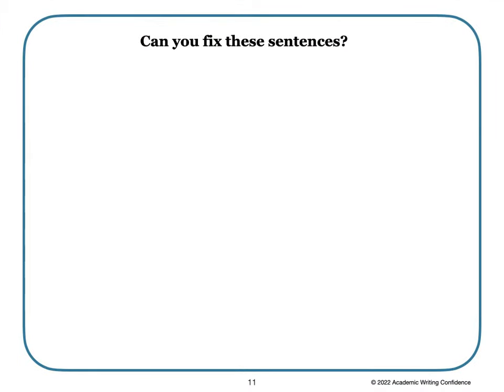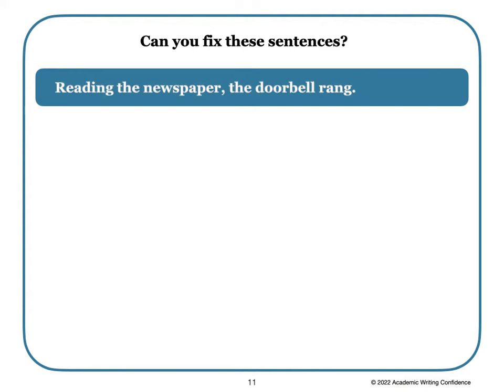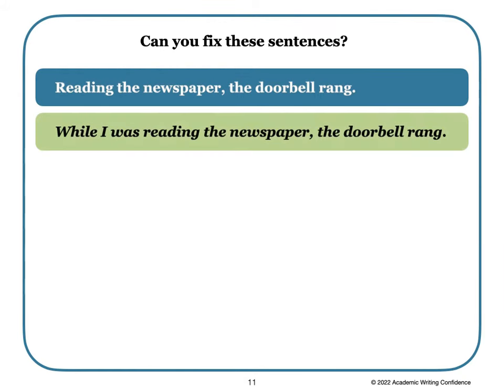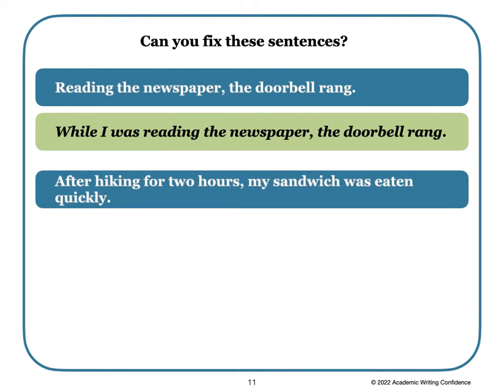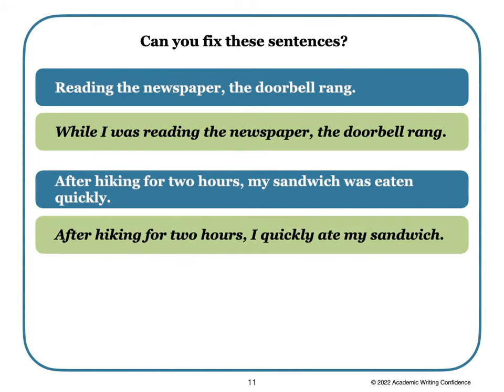Let's see if you can fix these sentences. 'Reading the newspaper, the doorbell rang' — was the doorbell reading the newspaper? One way to make this clearer: 'While I was reading the newspaper, the doorbell rang.' Now it is clearer that I was the one reading the newspaper. Next: 'After hiking for two hours, my sandwich was eaten quickly' — had the sandwich been hiking for two hours? Here's one fix: 'After hiking for two hours, I quickly ate my sandwich.'